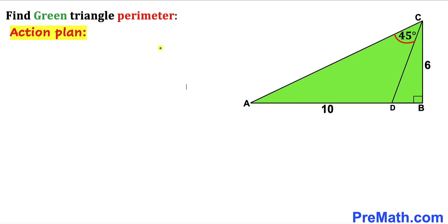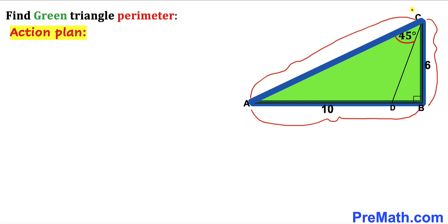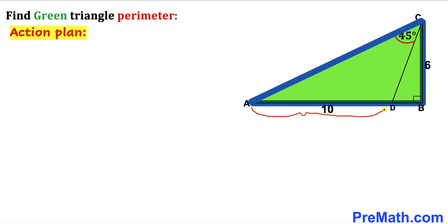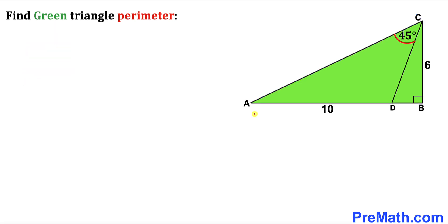Here's our action plan. Since we are interested in calculating the perimeter of this triangle — in other words side length AB plus side length BC plus side length AC — we know only segment AD which is 10 and side length BC which is 6. So our task is to calculate segment BD and the whole side length AC. Let me label this segment BD as X units.